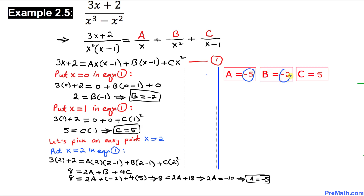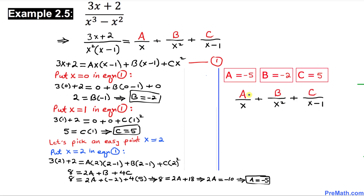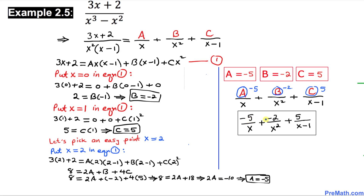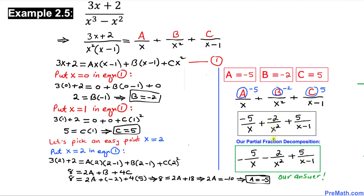So our values are: A equals negative 5, B equals negative 2, and C equals 5. Substituting these into the partial fraction decomposition gives our final answer. Thanks for watching, and please don't forget to subscribe to my channel for more exciting videos. Bye bye.